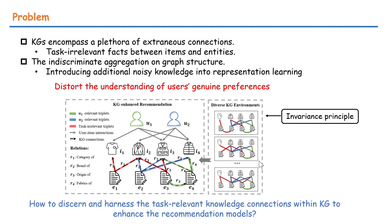However, knowledge graphs are often not tailored for recommendation tasks and encompass a plethora of extraneous connections, such as task-irrelevant facts between items and entities. Indiscriminate aggregation introduces additional noisy knowledge into representation learning, which can distort the understanding of users' true preferences,